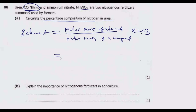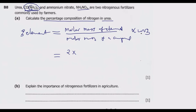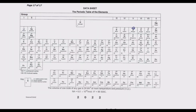Looking at the formula for urea, nitrogen appears with a subscript of 2, so we multiply 2 by the relative atomic mass of nitrogen. Going to the periodic table, the relative atomic mass of nitrogen is 14, so that gives us 2 multiplied by 14 for the numerator. Now we need to find the molar mass of the compound. The formula is CH₄N₂O — we have C, O, and NH₂ with a 2 outside.